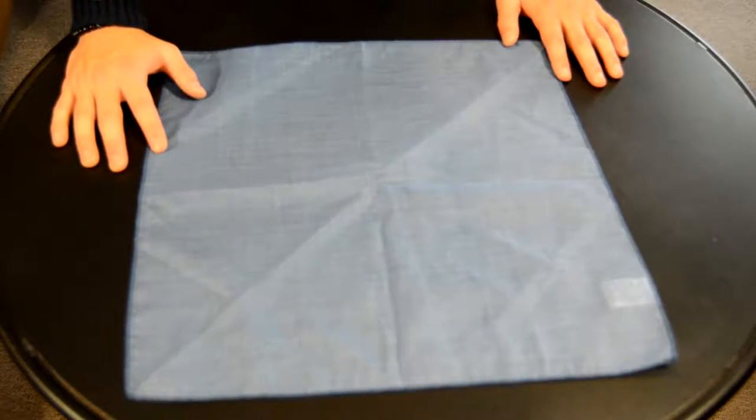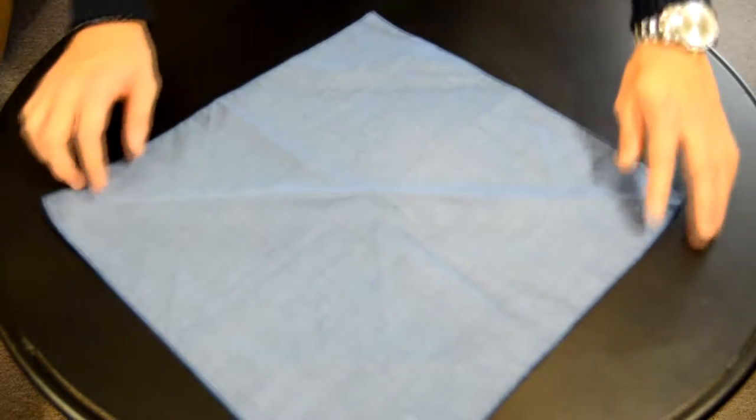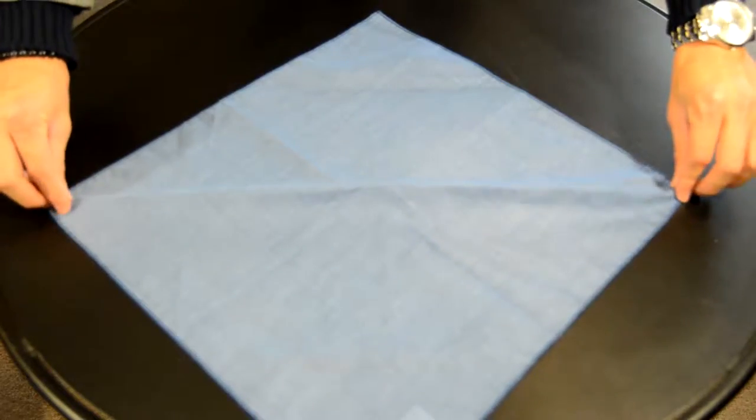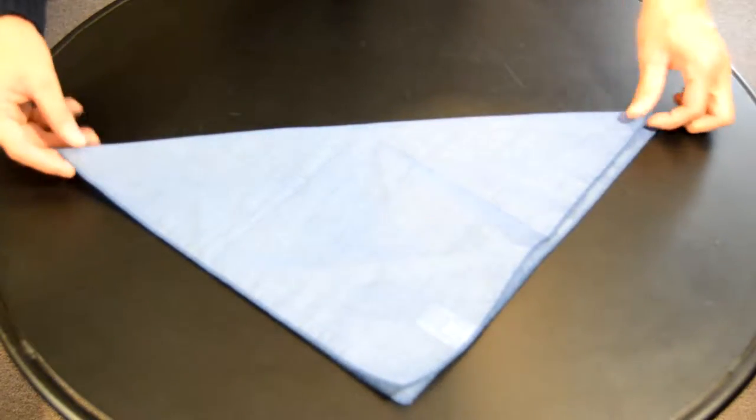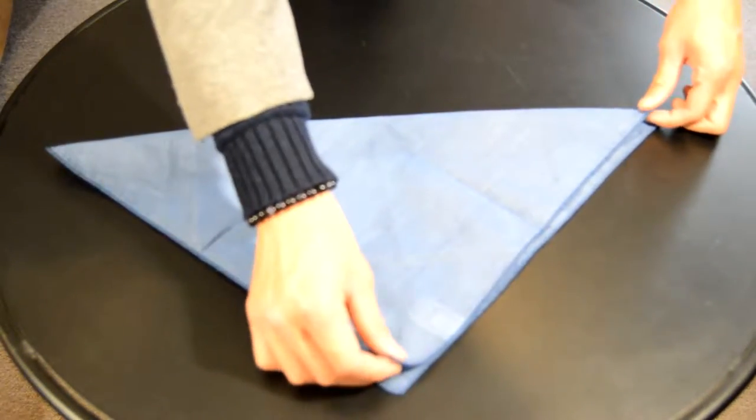All right guys, starting off today we're going to turn the pocket square sideways, then grab it halfway and flip it over so it makes a triangle. Make sure everything is neatly folded and symmetrical.